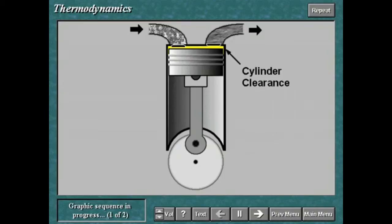In each cycle, there is an area of the cylinder that is not swept by the piston. A volume of gas remains in this area at the end of each compression stroke.